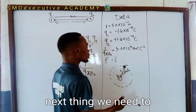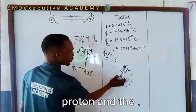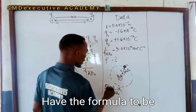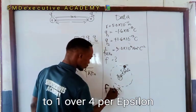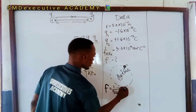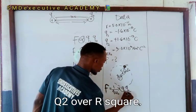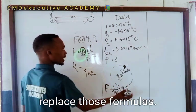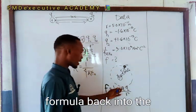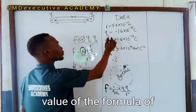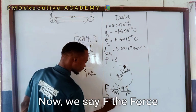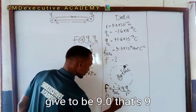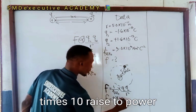Now we calculate the force of attraction between the proton and the electron. F equals — recalling the formula — F equals 1 over 4π epsilon naught times Q1Q2 over r squared, where K has been substituted as 1 over 4π epsilon naught. Substituting values: F equals 9.0 times 10 raised to power 9, multiplied by Q1Q2 over r squared.